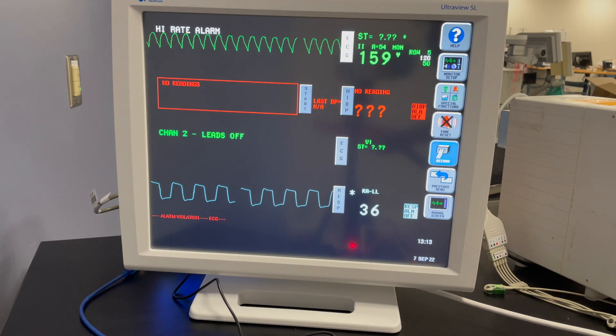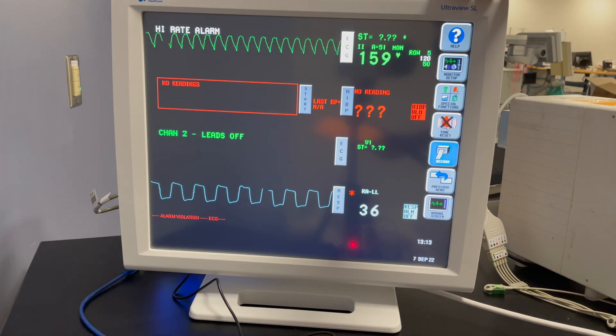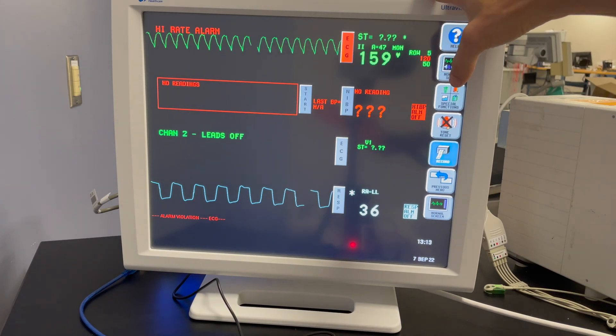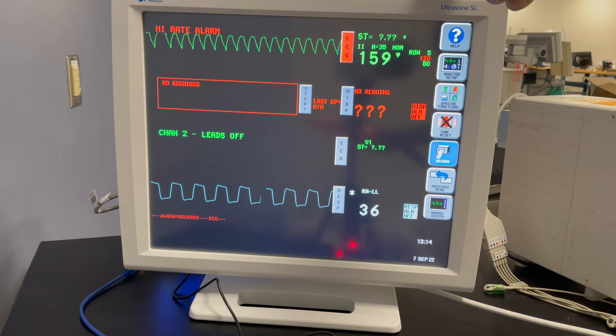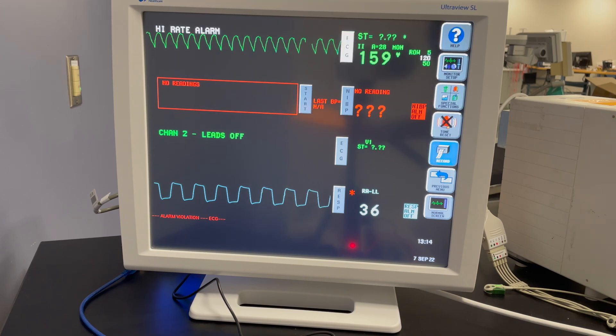One thing you'll note is that different patient monitors have different alarm settings and different ways that they detect tachycardia and v-fib. So you may get those alarms to throw, you may not. It's going to depend on how your monitor is doing that calculation, and it can be very dependent on the make and model of your patient monitor.